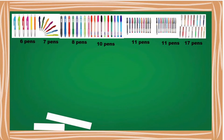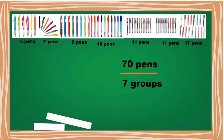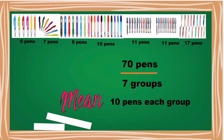There are 7 groups of pens. We need to regroup the pens so that each of the 7 groups contains the same number of pens. I have 70 pens and 7 groups, so we will divide 70 pens by 7 groups, and each group should have 10 pens. So that is our mean. The mean is the average of a collection of data.